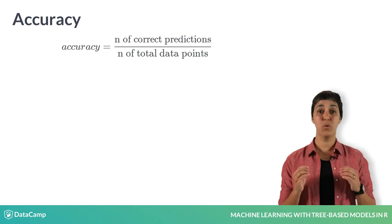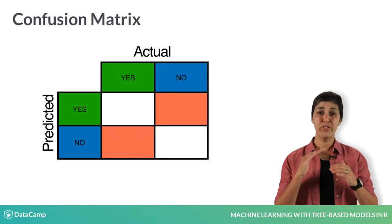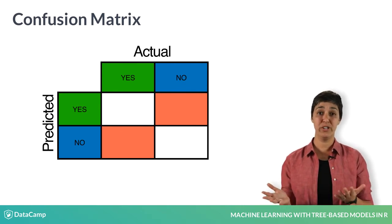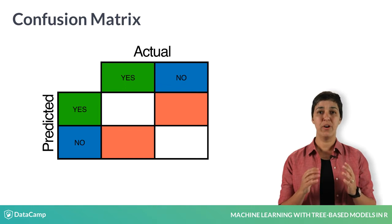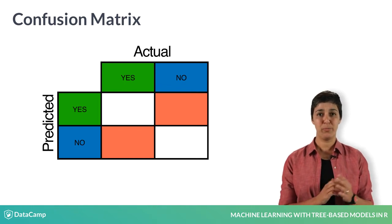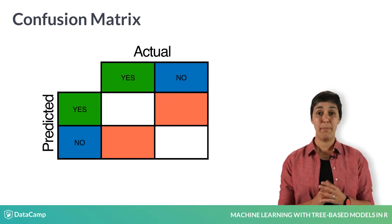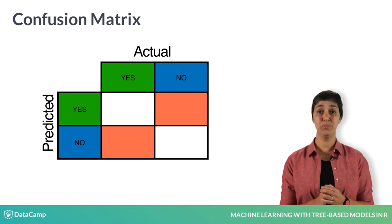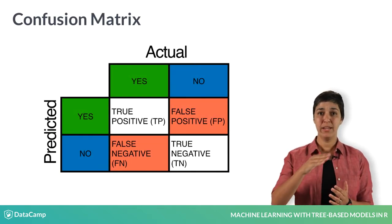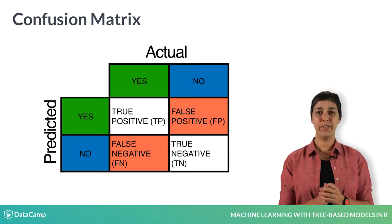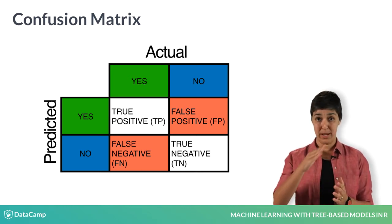A confusion matrix, or a confusion table, shows a more detailed breakdown of correct and incorrect classifications for each class. The columns of a confusion matrix correspond to the true labels, and the rows represent the predictions. In a binary classification problem, the confusion matrix will be a two-by-two table. The main diagonal contains the counts of correctly classified examples, and a good model will contain most of the examples in the main diagonal.